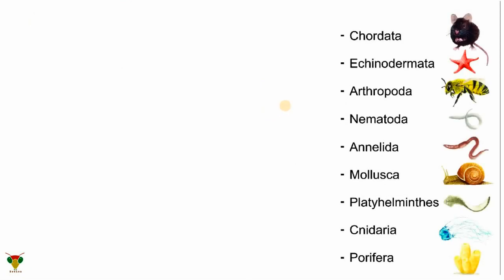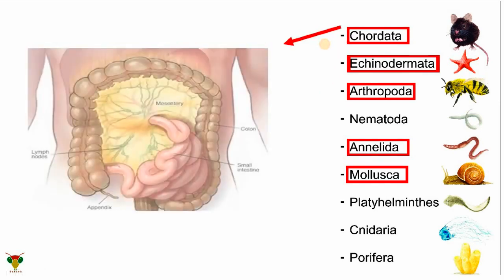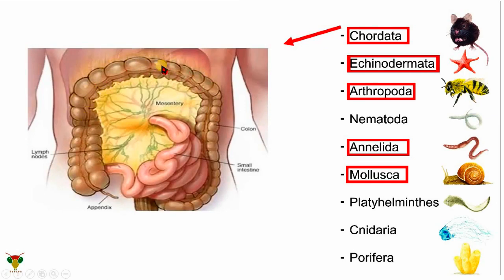The examples of coelomic body patterns include Mollusca, Annelida, Arthropoda, Echinodermata, and Chordata — these are all the phyla included in the triploblastic coelomate pattern. In the structure, we can see that organs are not loosely attached to the body wall; they are held in place by a suspension structure. This suspension keeps the organs at their place, and this is the main feature of the coelomic body pattern.